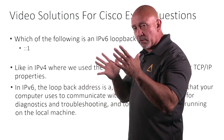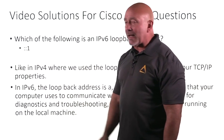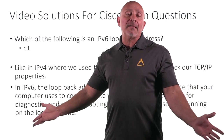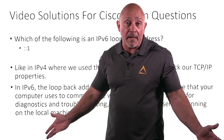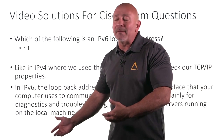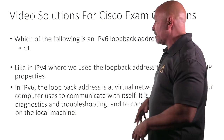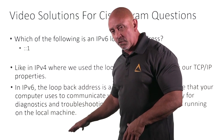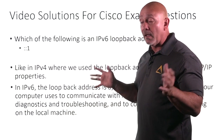The loopback address ::1 has all other fields as zeros — truncated. It's the same concept as IPv4 loopback: you use it to test your TCP/IP stack. You can call it a virtual network interface, used for diagnostics and troubleshooting. Same thing.